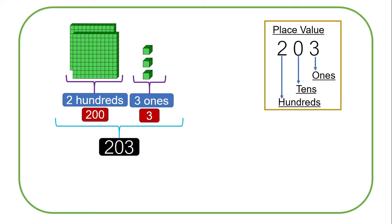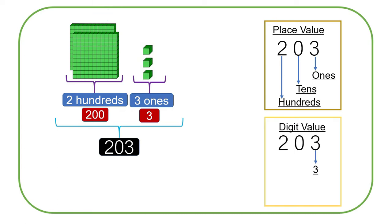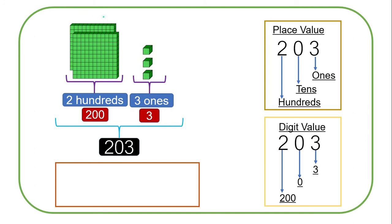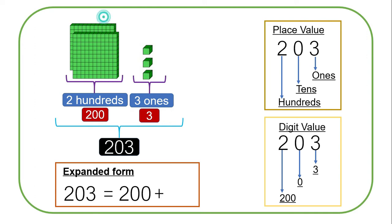For the digit value: the digit value of three is three, the digit value of zero is zero, and the digit value of two is two hundred. For the expanded form we have got 200 plus three, so our whole number is two hundred and three and the expanded form is 200 plus three.